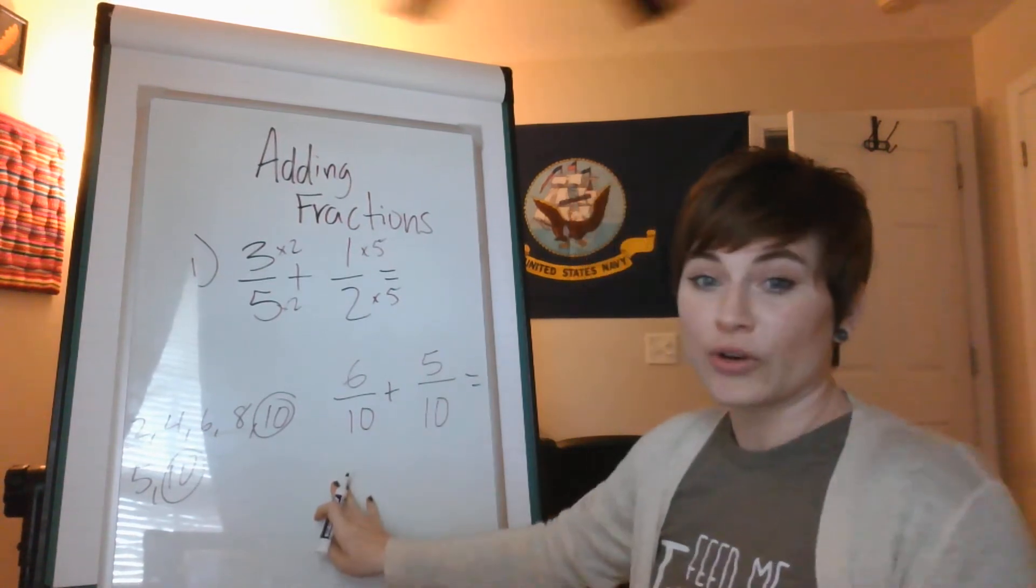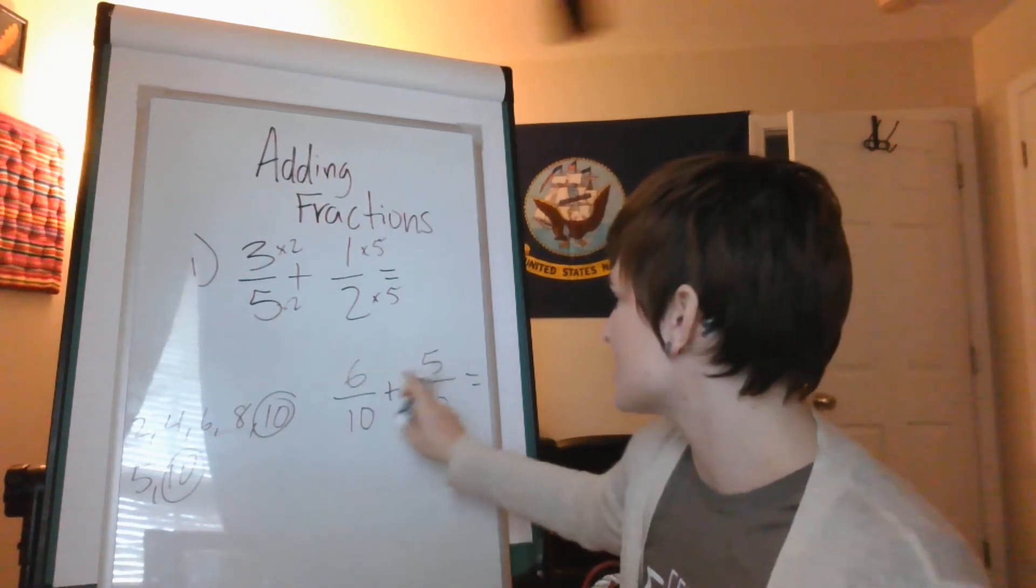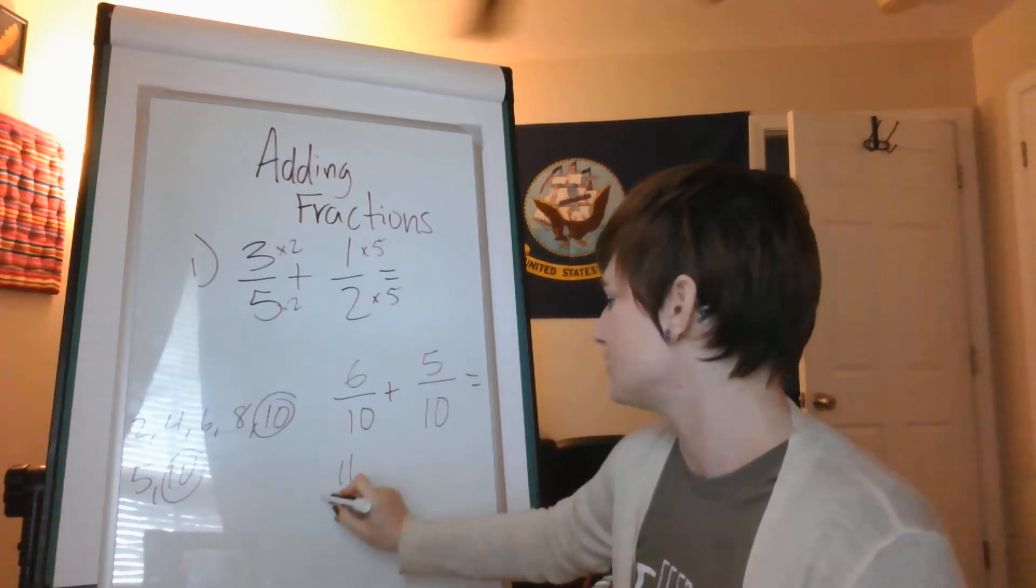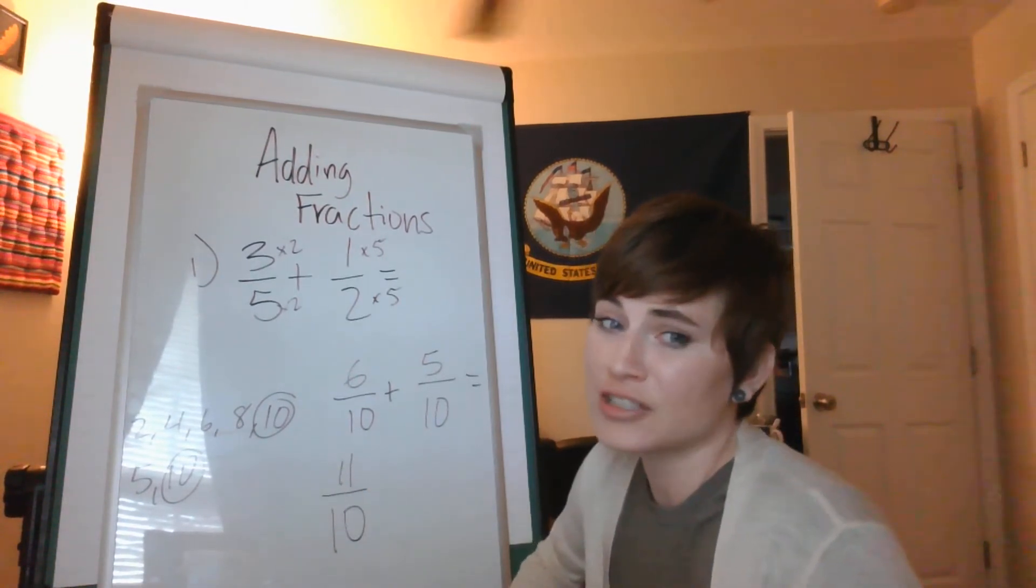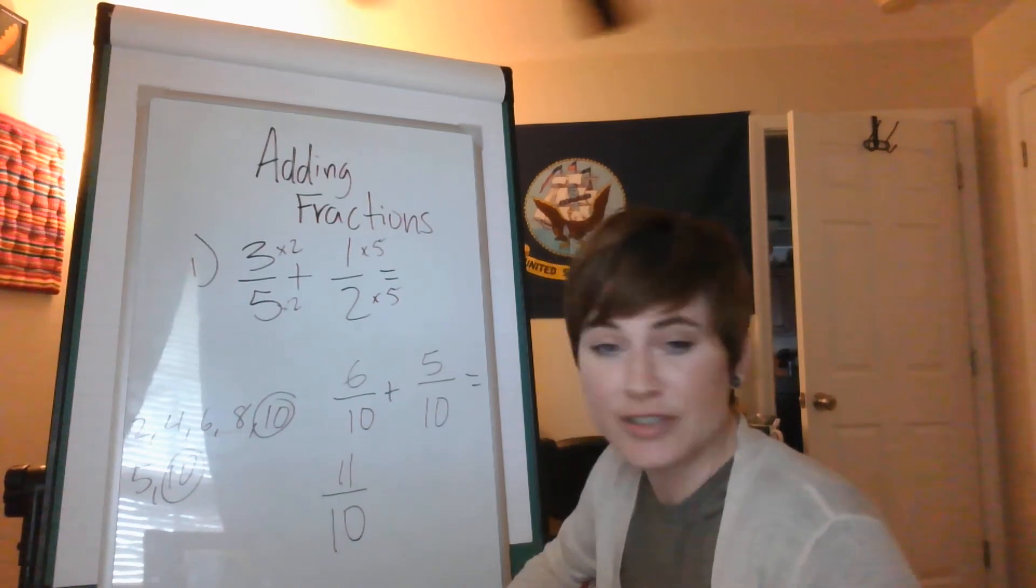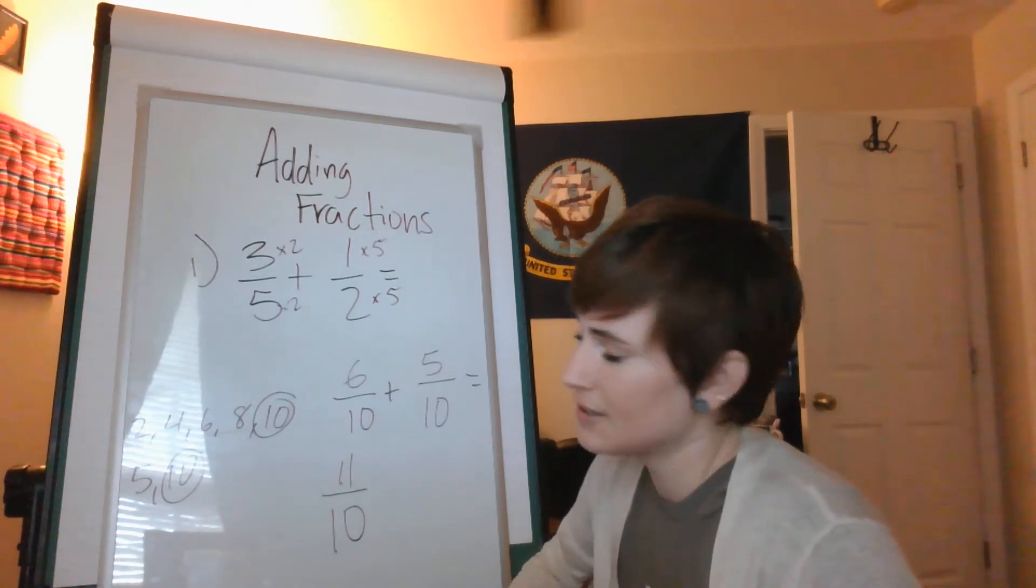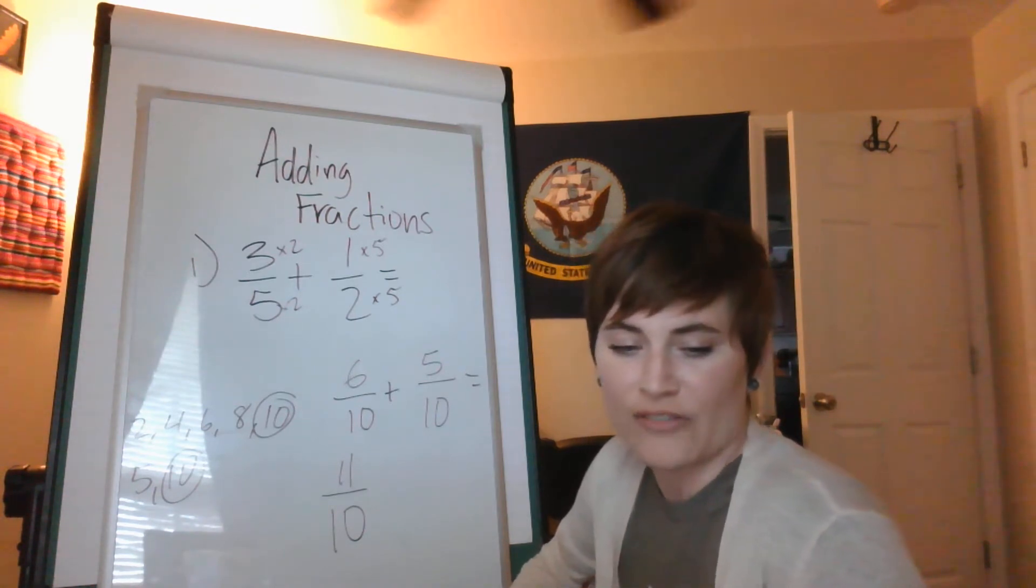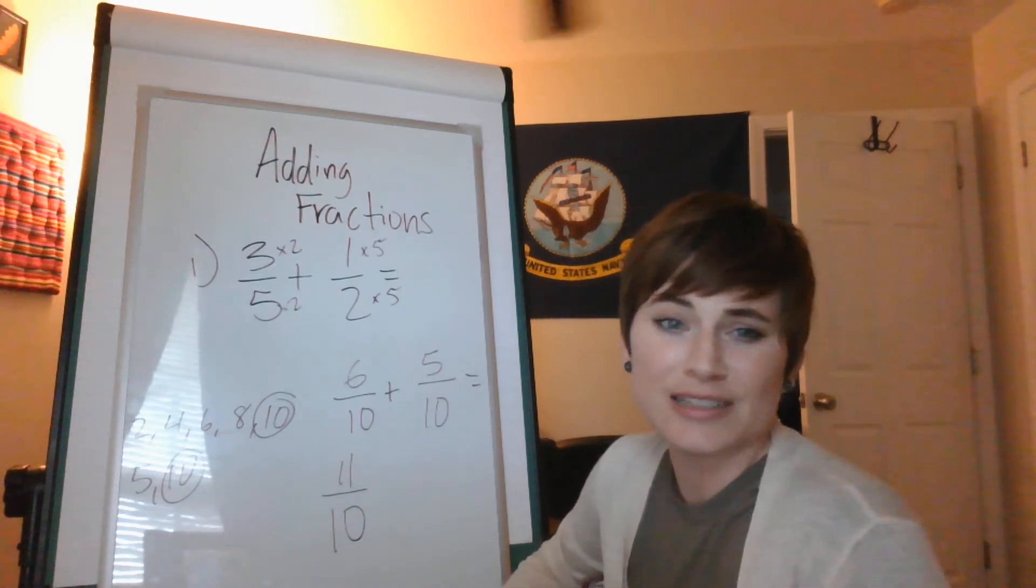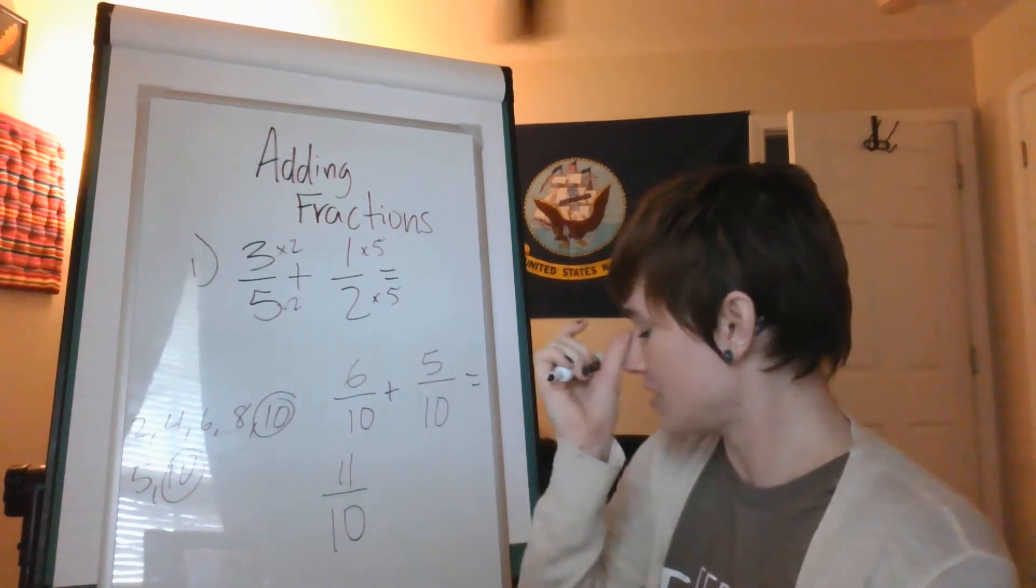So now we're going to add them. We got six plus five is eleven, eleven tenths. That is an improper fraction. For now, you can either put eleven tenths or you can go a little bit further. That's up to you. I'm not going to count off and I know that when you're doing your I-ready, it's not going to count off either. It'll take either answer.